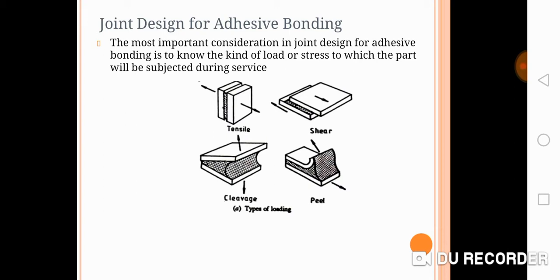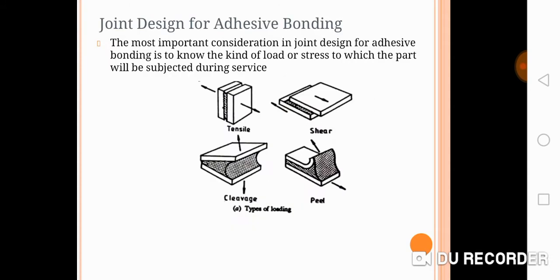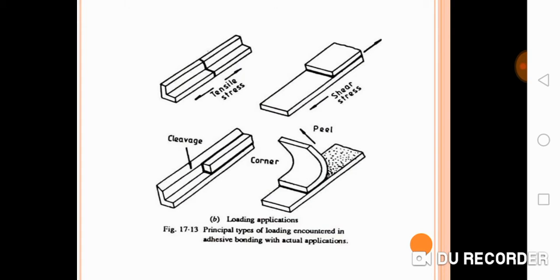While designing a joint using adhesive bonding, the most important consideration is the type of load acting on the service part — that is, what load is acting on the material after joining. The different loadings are tensile loading, shear loading, cleavage loading, and peel loading, all of which are experienced in structural applications. According to what load is acting, you have to design the joint accordingly.